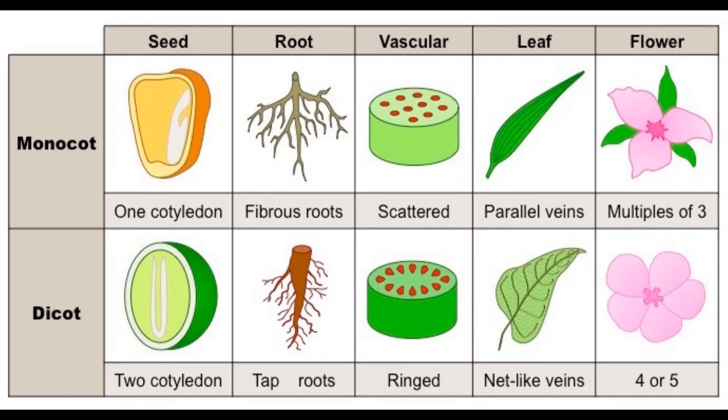There are other ways to tell the difference, though. Monocot plants have flower petals in multiples of three, parallel veins in their leaves, and sprawling fibrous root systems. Dicot plants have flower petals in multiples of four or five, have net-like veins in their leaves, and have a long taproot rather than a sprawling root system.